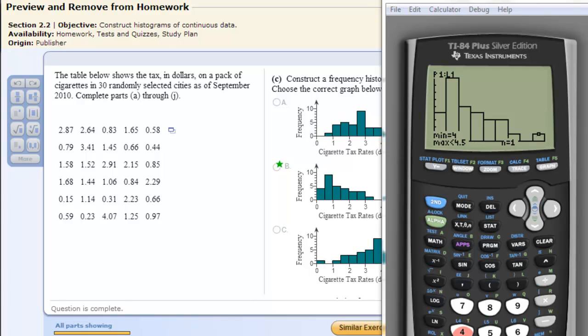And that's how you can quickly create a histogram with pure data on the TI-83/84 calculator.